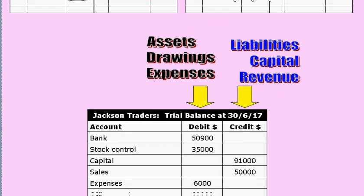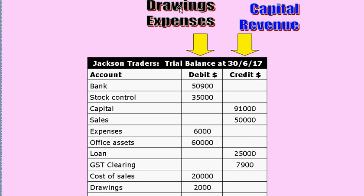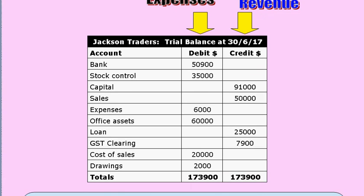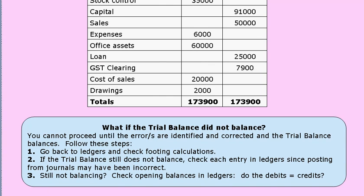Once we've done that, we record those values in the trial balance — it doesn't matter which order you do this in. Debit balances go in the debit column and credit balances go in the credit column. Drawings, expenses, and assets end up in the debit column; liabilities, capital, and revenue end up in the credit column. Add it up and it should balance. If it does, the general ledger is accurate. If it doesn't, pause and check the three steps outlined on screen.